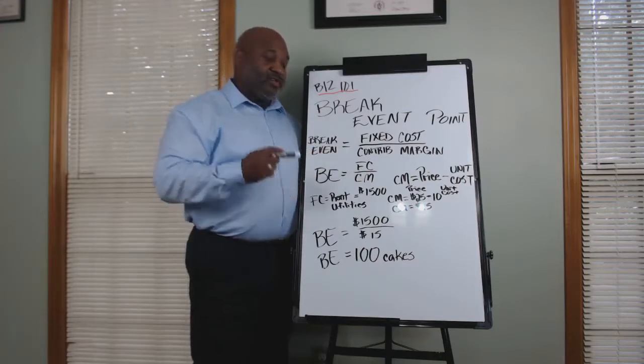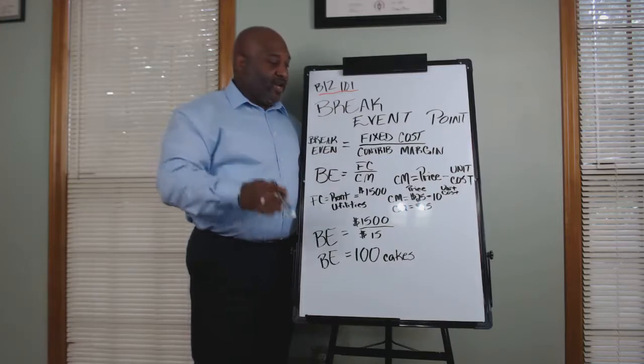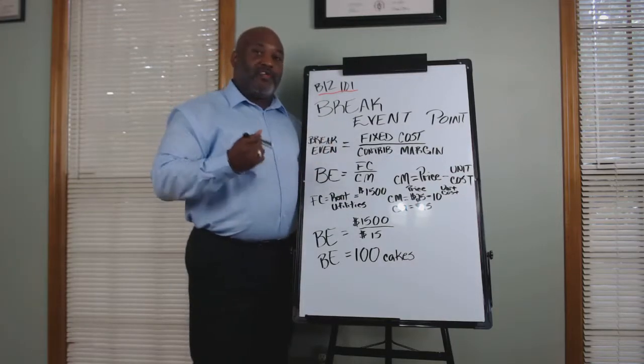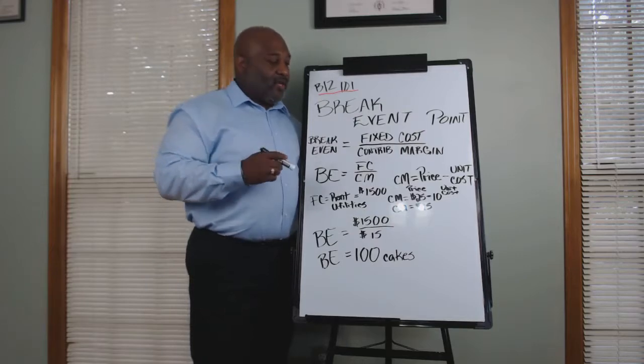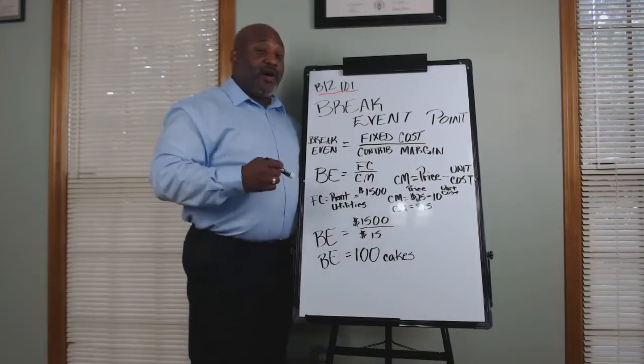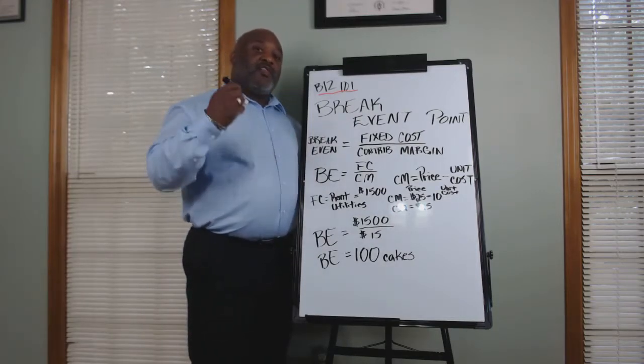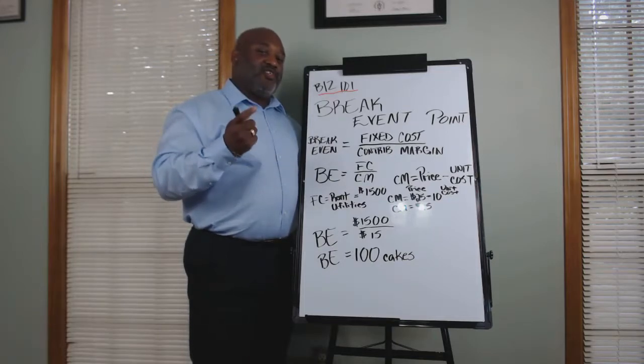We look at contribution margin. Contribution margin is defined as your price minus your unit cost. So what do we say is the unit cost? We know price being what we're going to sell the product for. The unit cost is the cost that it takes to make each unit.